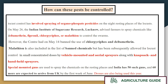These chemicals are being used in small concentrated doses by vehicle-mounted and aerial sprayers, along with knapsack and hand-held sprayers. Spatial mounted guns are being used to spray chemicals in the resting places. India has 50 such guns, and 60 more are arriving from the UK by the first week of June. This year, drones are also being used.